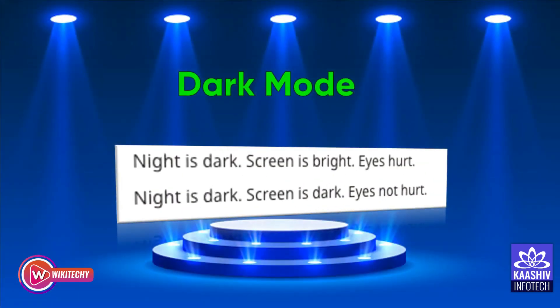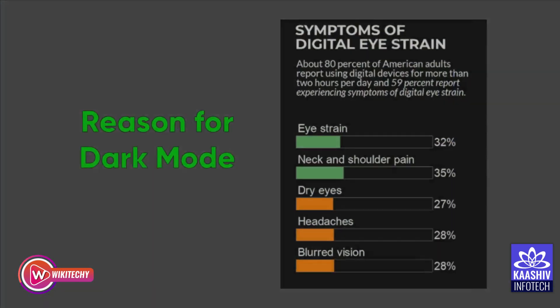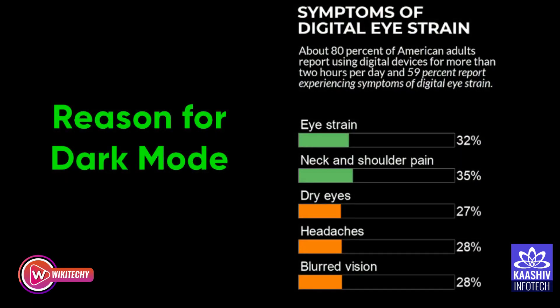Now, why go with dark mode? Eye strain is one of the major factors, and apart from that, you can save battery. If the night is dark and the screen is really bright, your eyes will get hurt. If the night is dark and the screen is also dark, your eyes won't hurt — that's the simple combination. Dark mode protects your eyes.